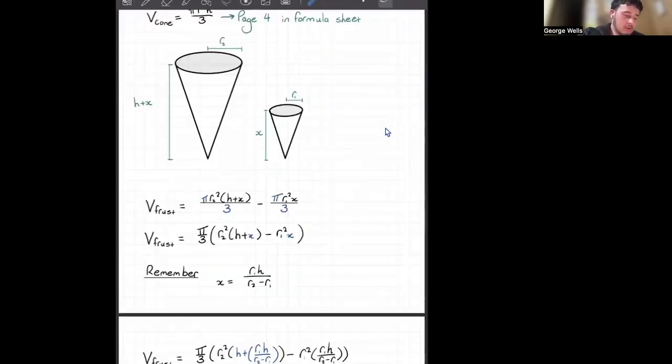Next up, I've noticed that pi over 3 is a constant in both terms. So I've taken that out the front, which is why that's over here now. And we've still got this x term. But remember, we're trying to do dv dr. So we want more things in, I guess, radius and whatnot.